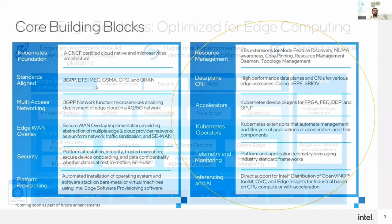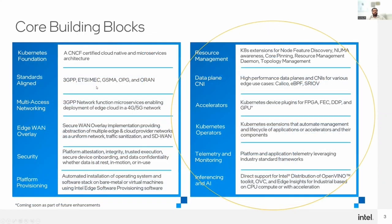In terms of building blocks, the left side here lists out different capabilities available through SmartEdge Open. Through a cloud-native microservices model and aligning with different 5G standards, a multitude of these capabilities are being explored for RIC. In collaboration with Red Hat, we are looking at utilizing building blocks on the right to enhance the RIC to operate under certain SLAs.